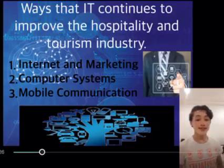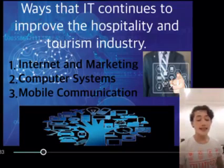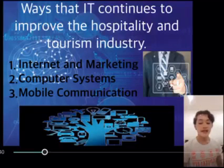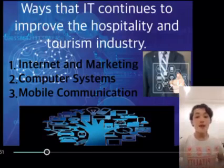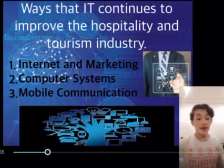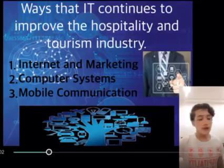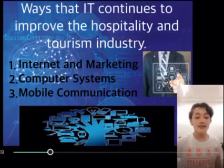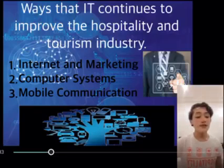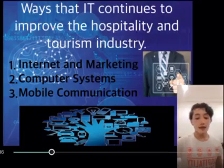Number two, computer systems. Computer systems allow communication between larger hotel chains with multiple locations to connect easier. They also help keep staff on the same page and make it easier to access information, making the guest experience much better. Guest requests, housekeeping information, and reservations can also be found on one system. Number three, mobile communication. Mobile tablets and smartphones have replaced large desktop computers. This is helpful because many travelers take a mobile device with them on a trip, helping hospitality businesses keep customers advised of changes and delays to their reservations, offer deals, and advertise using GPS tracking.